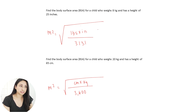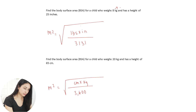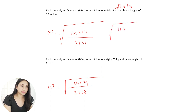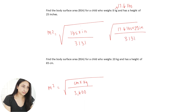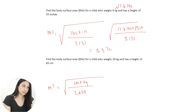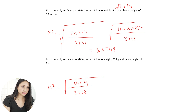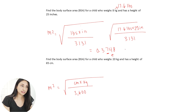For the first example, I'm given kilograms so I convert to pounds: 8 kilograms times 2.2 equals 17.6 pounds. Then I plug in: the square root of (17.6 pounds times 25 inches divided by 3,131), which gives me 0.3748. If they tell me to round to the hundredths place, the digit in my hundredths place is 7, and the number to the right is 4, so I round down. My final answer is BSA equals 0.37 meters squared.